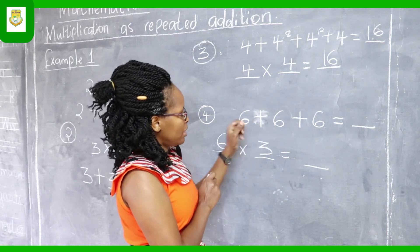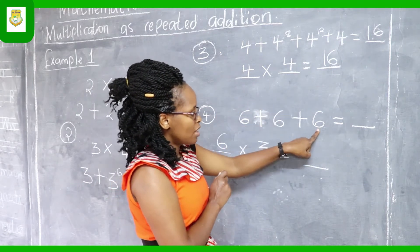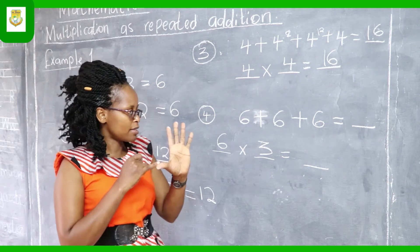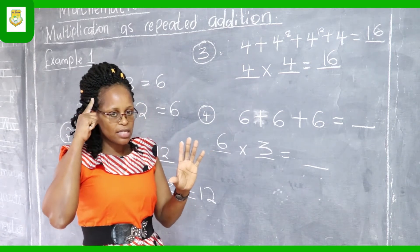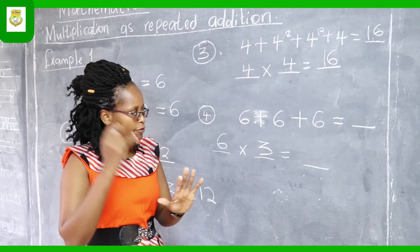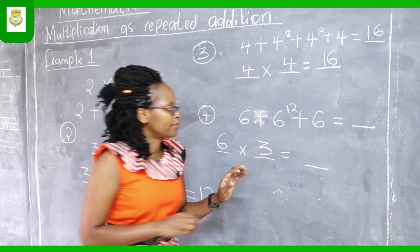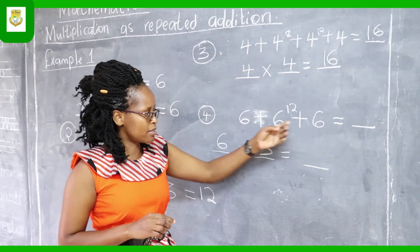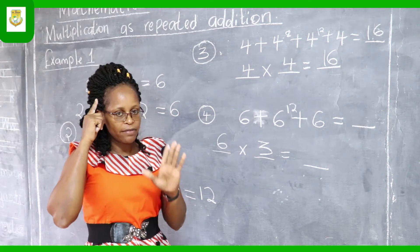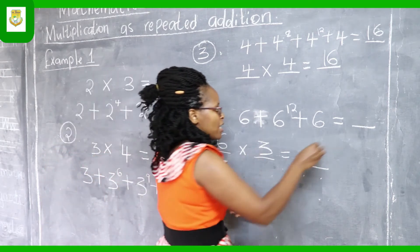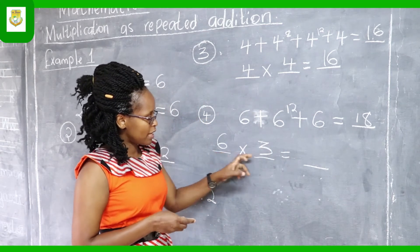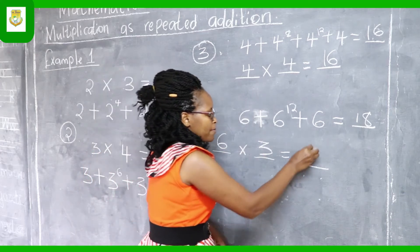Let's find our answer. Following the same procedure, we first add the first two sixes: six on our fingers, six on our head — six, seven, eight, nine, ten, eleven, twelve. We have twelve; we write twelve there. Now twelve plus six: twelve, thirteen, fourteen, fifteen, sixteen, seventeen, eighteen. So our answer is eighteen. The same eighteen appears in our multiplication sentence: six times three equals eighteen. This is the procedure followed when we do multiplication as repeated addition.